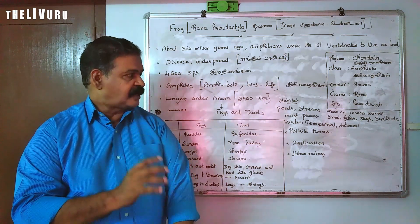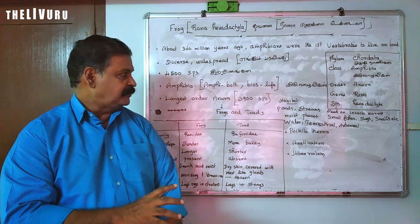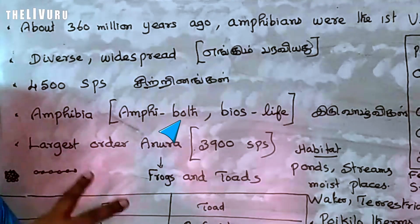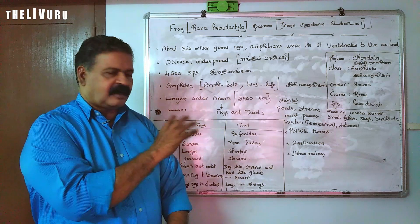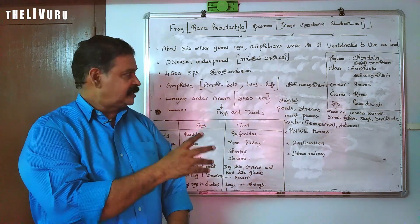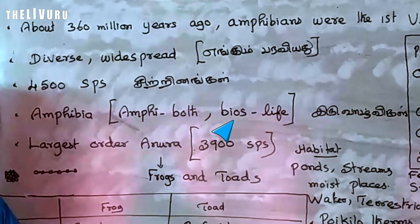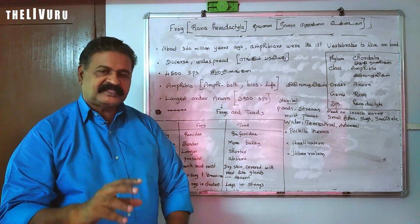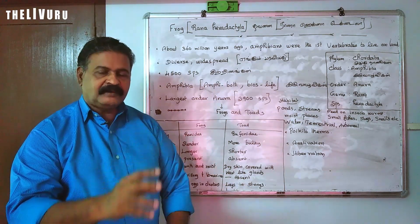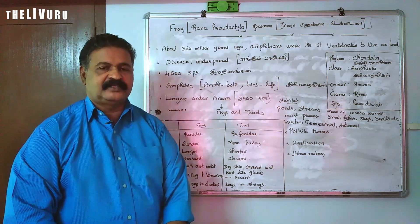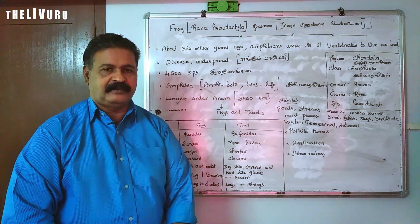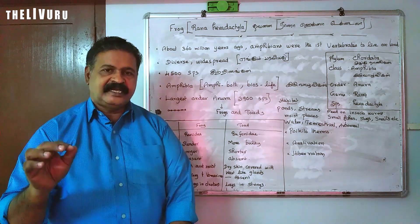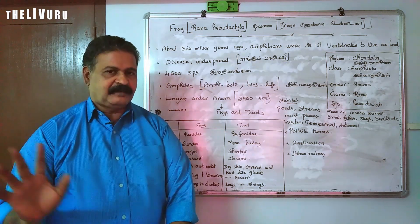Amphi means both — half living in land and half living in water. Bios means life. Amphibia belongs to them. In order to complete its life cycle, it needs an aquatic medium also.